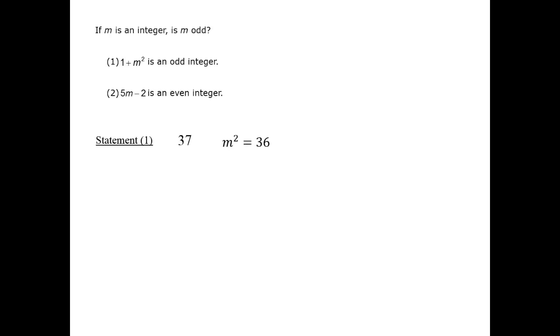In that case, m squared is 36 and m is 6, which is even. We get an answer to the question, which is no. Trying other possible values, we always find that m is even and we get a consistent answer of no, implying that we have definitive information to answer the question.